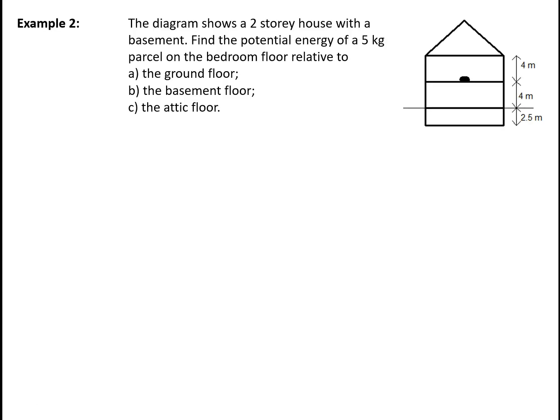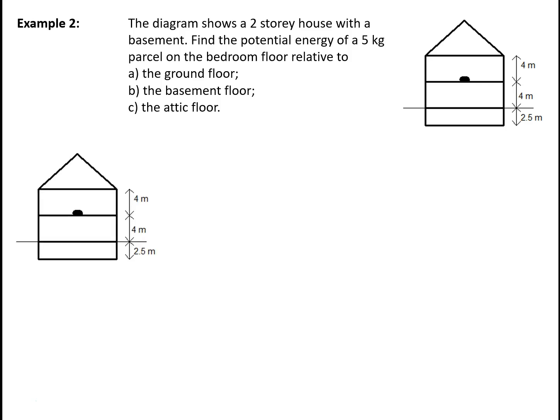We've got a two-storey house with a basement, and a five kilogram parcel which is sitting on the bedroom floor. We have to find the potential energy of that parcel relative to, first, the ground floor. If we're working relative to the ground floor, that is our zero potential energy level. The parcel is four meters above that, so the potential energy is 5 × g × 4, which gives 196 joules.